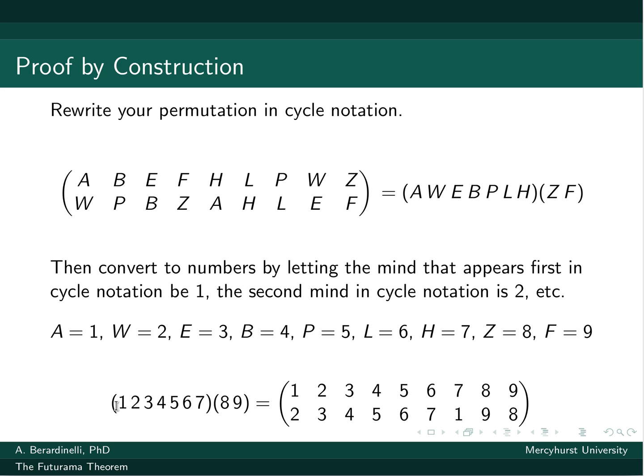So now our permutation looks like this. 1, 2, 3, 4, 5, 6, 7 is a cycle. 8 and 9 is a cycle. And then when I convert everything in numbers and put it in number order in the top row, this is what our two-row notation looks like now.